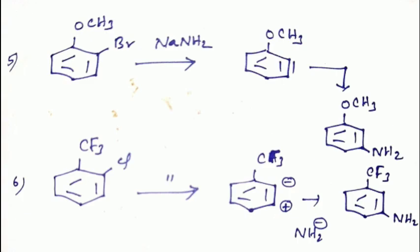Fifth example: ortho-bromemethoxybenzene with nucleophile sodium amide (NH2 minus). In the first step, elimination of HBr gives benzyne. In the second step, NH2 minus attacks at the meta position. The meta position has positive charge and the ortho position has negative charge. Therefore, we get the meta product relative to the methoxy group — only one product.